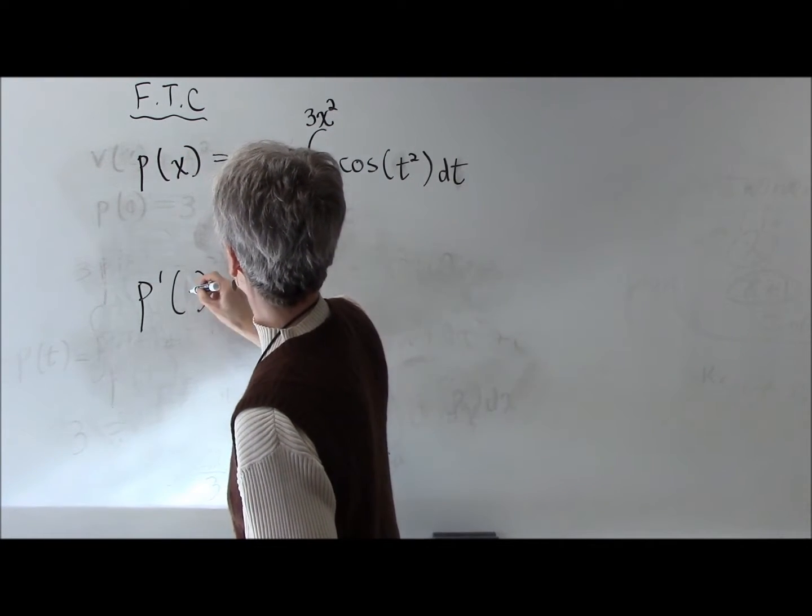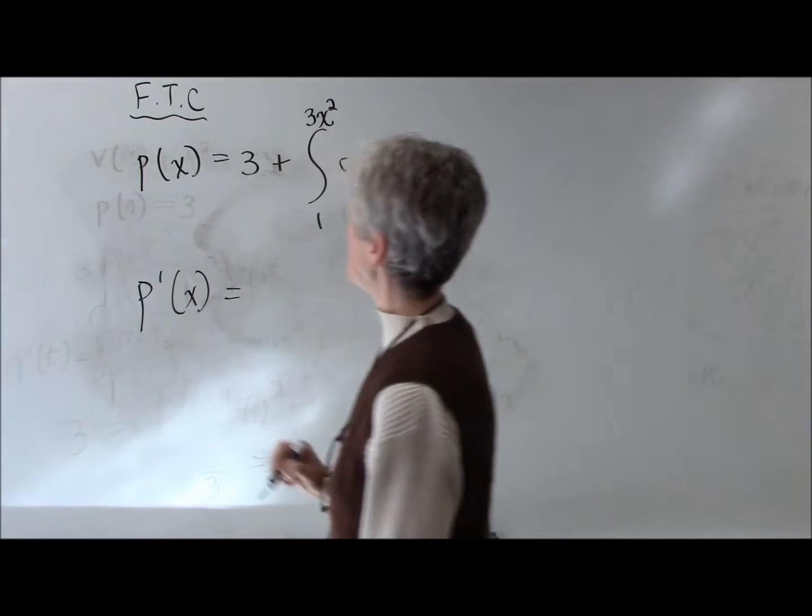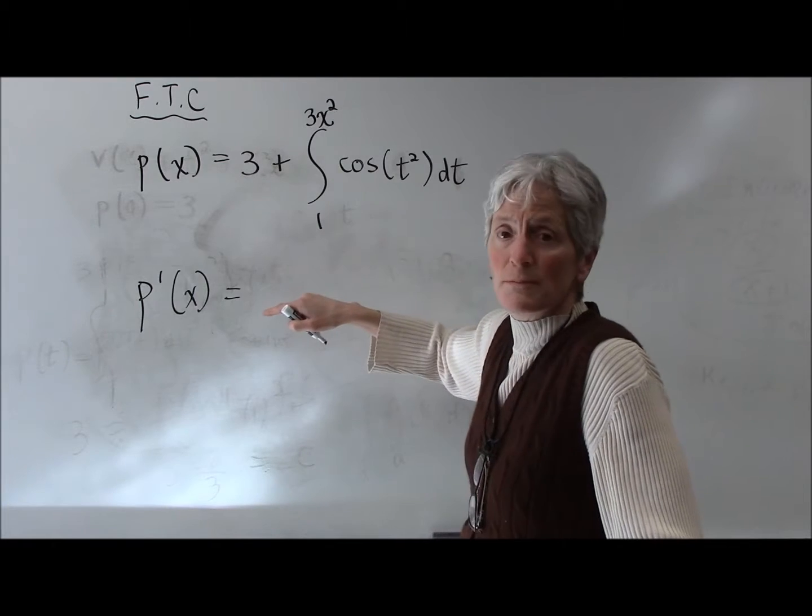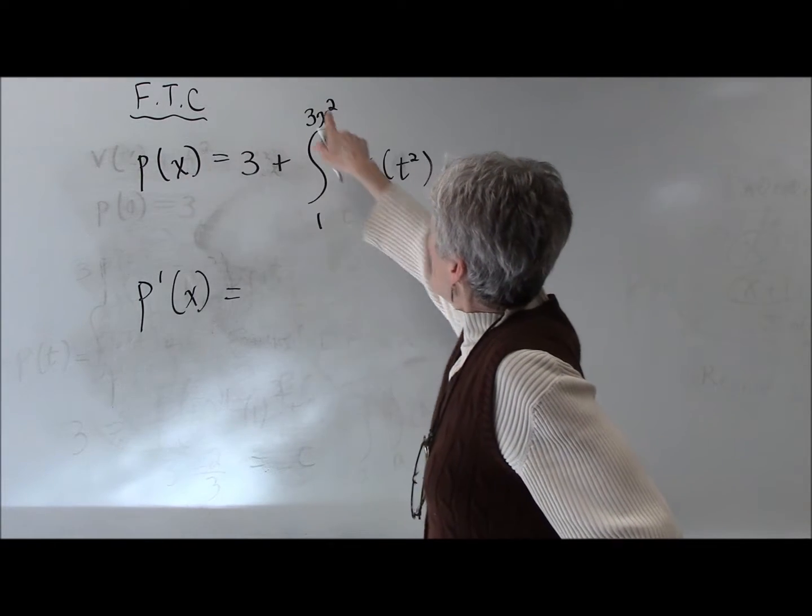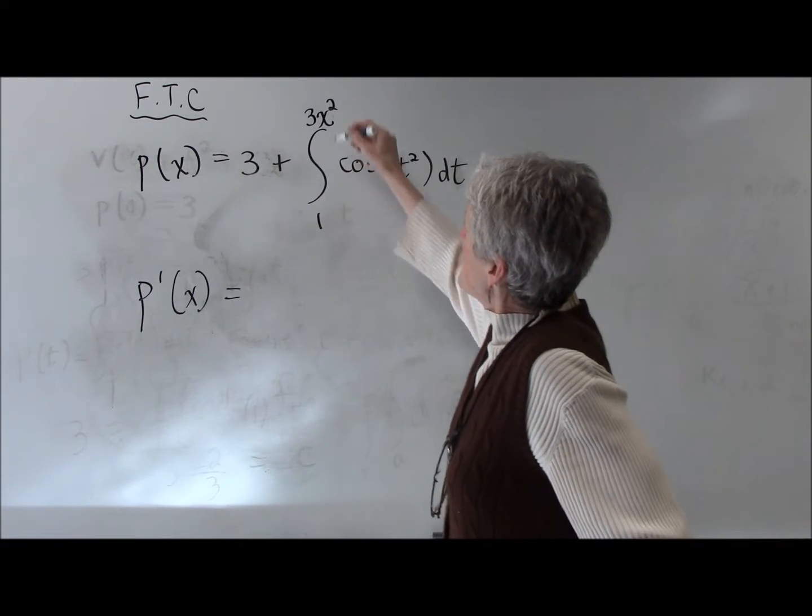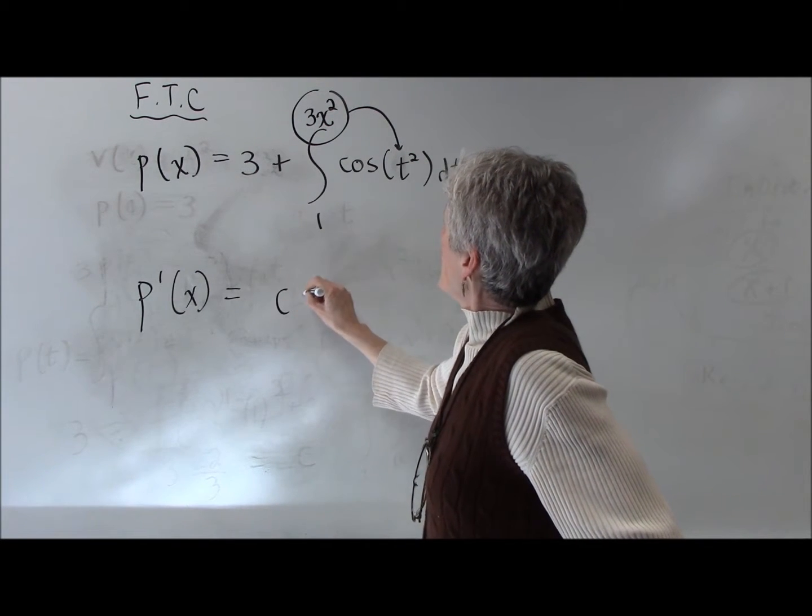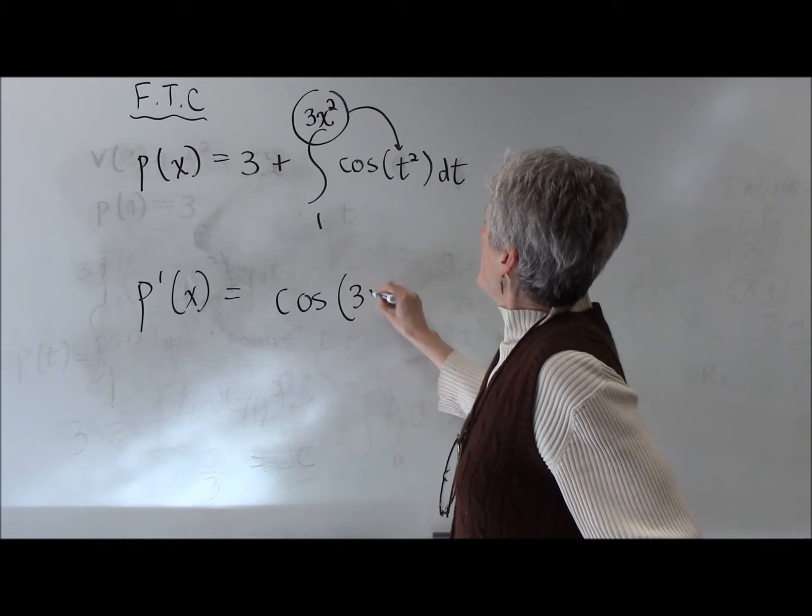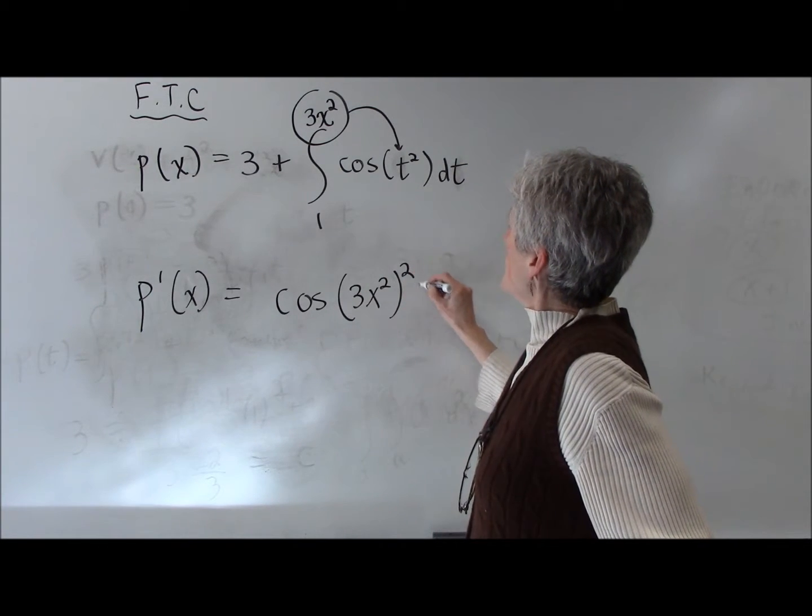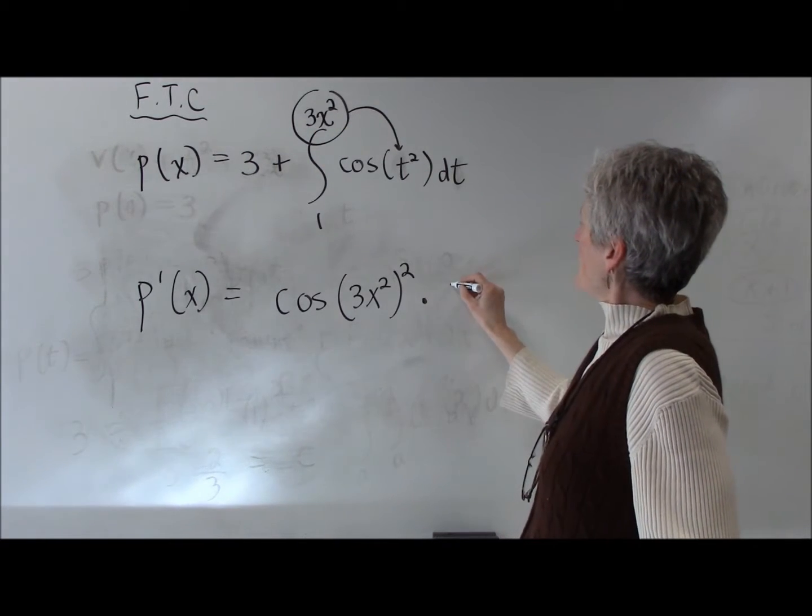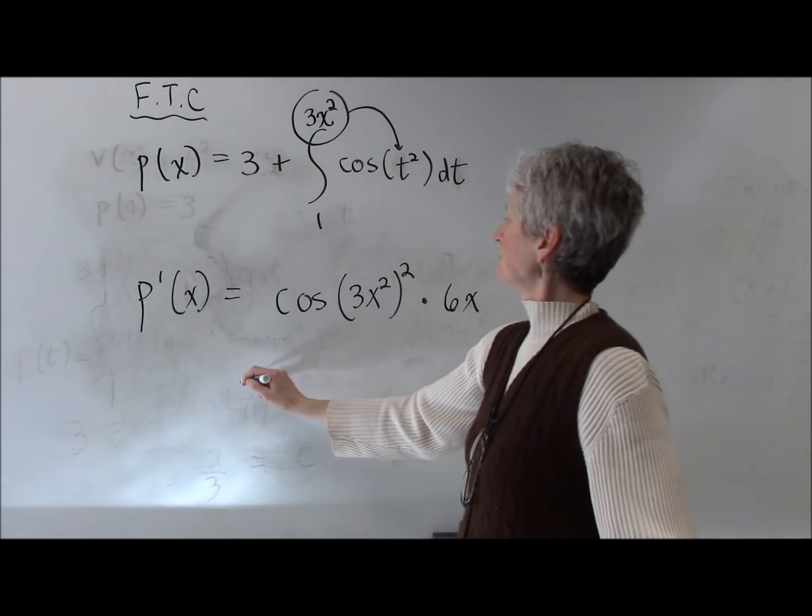I know I'm kind of messing with you now, changing variables. The derivative of 3 constant is 0. The derivative of this. Here's my fundamental theorem of calculus. This guy right here is going in here, so it's going to be the cosine of 3x squared, quantity squared, times chain rule, the derivative of 3x squared, which is 6x.